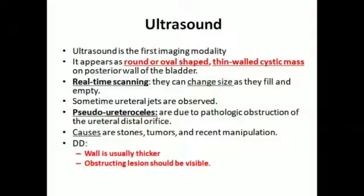Regarding diagnostic modality, ultrasound is the first imaging modality for diagnosis of urethrocele. On ultrasound, urethrocele appears as a round or oval-shaped, thin-walled cystic mass on the posterior wall of the bladder.